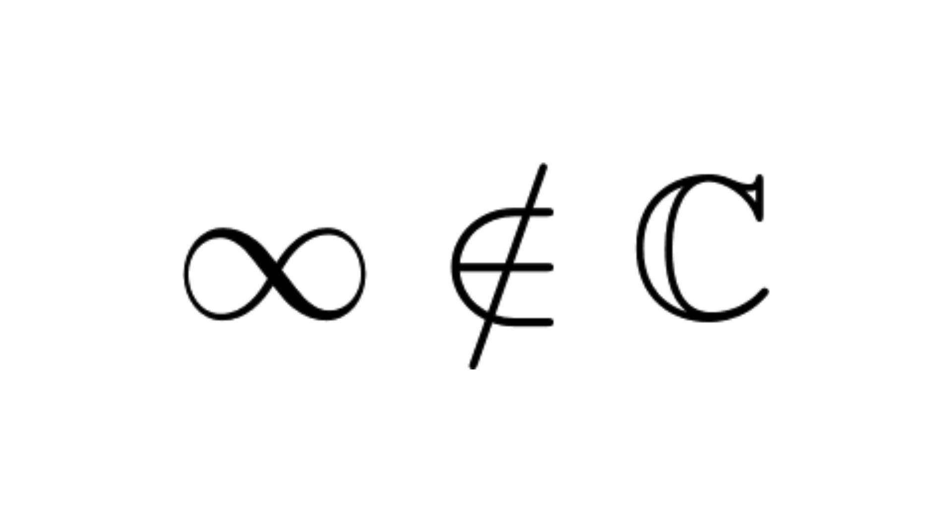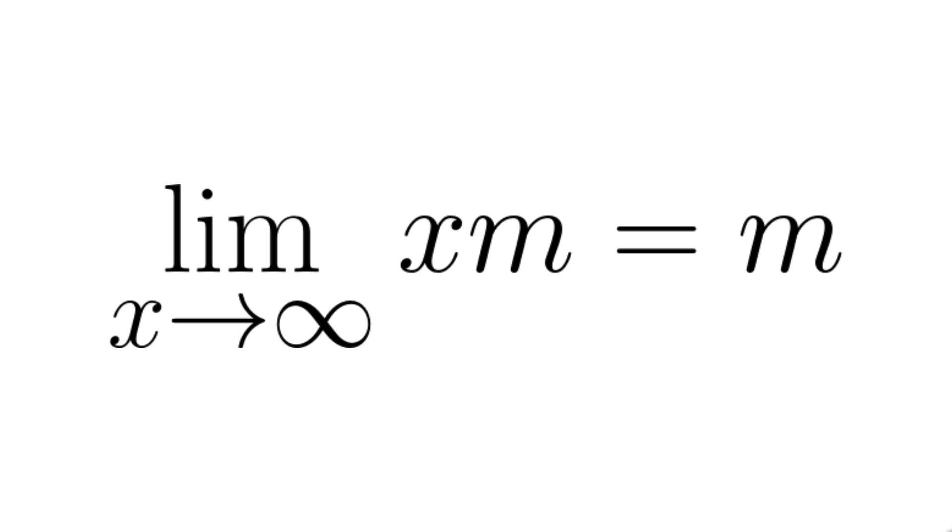The final thing to remember is that since infinity isn't a number, it technically doesn't make any sense to write infinity times by m. Technically, since infinity is just a concept, it should be the limit from x to infinity of xm equals m.